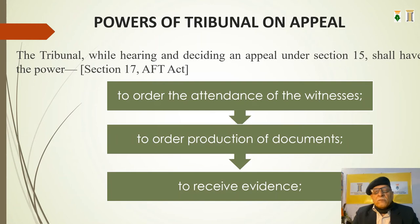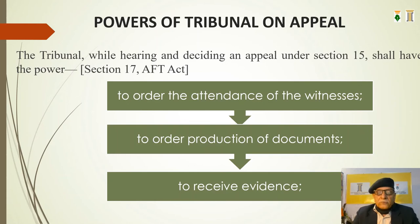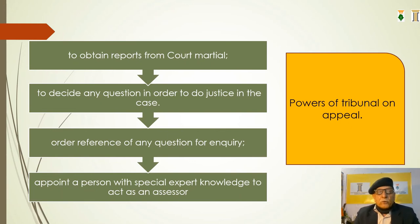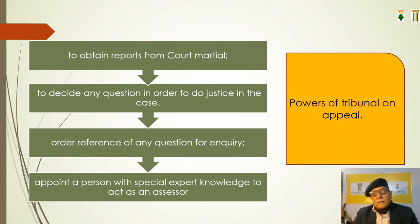The tribunal, while hearing and deciding an appeal under section 15, shall have the power under section 17 to order the attendance of witnesses, production of documents, and to receive evidence. These are substantial powers available to it as an appellate authority acting independently. It can obtain reports from the court martial, decide any question in order to do justice in the case, order reference of any question for inquiry, and appoint a person with special expert knowledge to act as an assessor. These are contained under the head 'Powers of Tribunal on Appeal.'